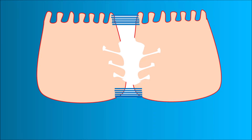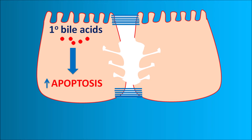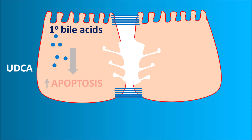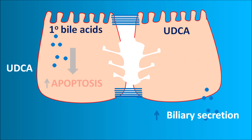At the hepatocytes, primary bile acids can increase apoptosis because they are hydrophobic. Excessive accumulation of primary bile acids within hepatocytes stimulates apoptosis, resulting in hepatic cirrhosis. UDCA, being a hydrophilic bile acid supplement, can replace the primary bile acids within hepatocytes, reducing apoptosis — an anti-apoptotic action. UDCA also increases bile acid secretion, which reduces gallstone formation and improves biliary flow.